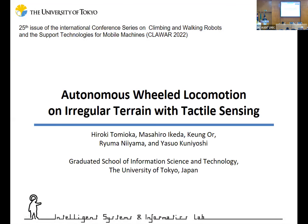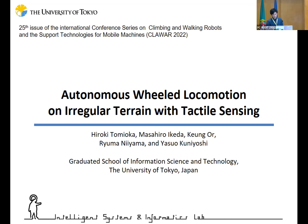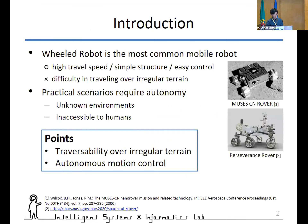I'm Hiroki Tomiyoka from the University of Tokyo, Japan. I'd like to make a presentation on this title. Wheeled robots are one of the most common types of mobile robots because of the high travel speed, simple structure, and easy control.